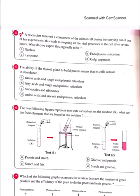Question number 4: A researcher removed a component of an animal cell, which led to stopping all vital processes in the cell after several hours. What do you expect this component to be? All vital processes in the cell are related to protein. Protein production starts from the nucleus — the nucleus produces RNA, which leads to protein synthesis. Removing the nucleus stops all vital processes. If lysosomes, endoplasmic reticulum, or Golgi were removed, not all vital processes would stop.